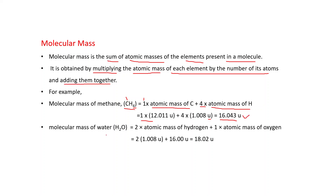Similarly, the molecular mass of water (H₂O) is: 2 × atomic mass of hydrogen, plus 1 × atomic mass of oxygen. Substituting the values and solving gives 18.02 U.